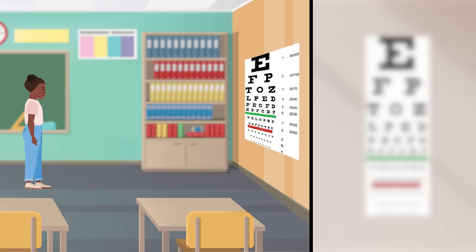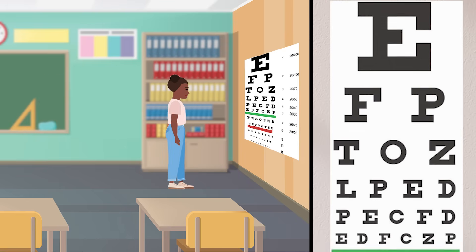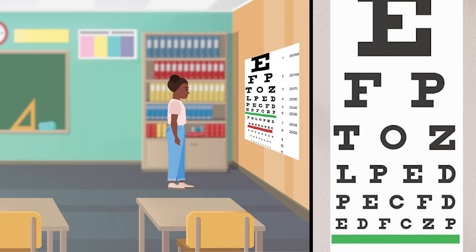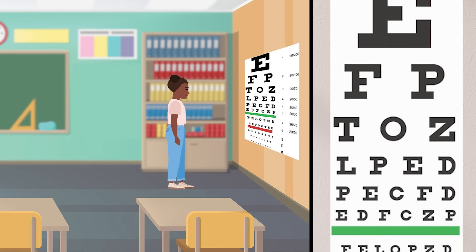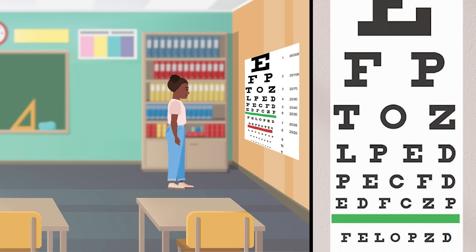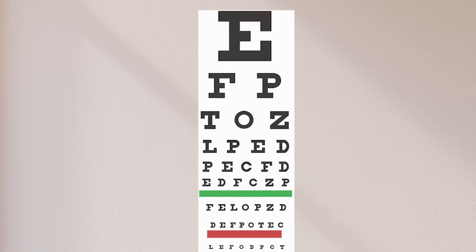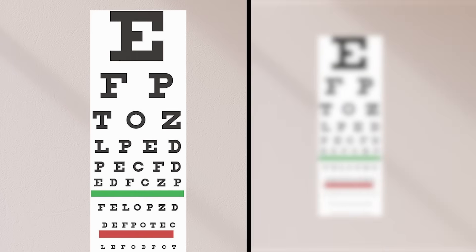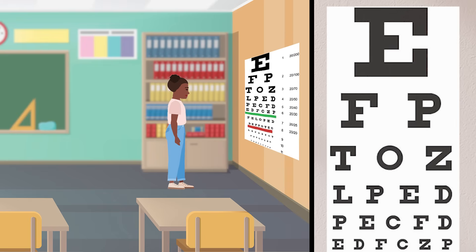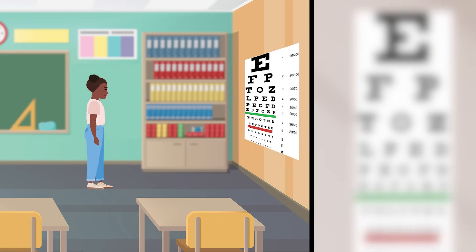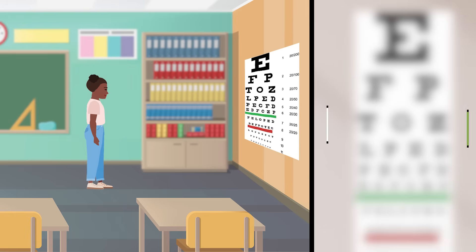When I used the eye chart in kindergarten, I could see the first row of letters, but by the second row it looked blurry. When I stepped closer, I could see all the letters clearly. I was worried that I'd done something wrong, but the teacher let me know I'd actually used the eye chart exactly right. The purpose of an eye chart is to find out what you see clearly and what looks blurry. I could see near clearly, but further away — even just a few feet away — things looked blurry. This was a sign that I'm nearsighted.